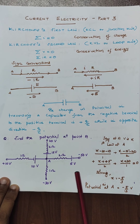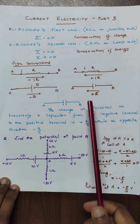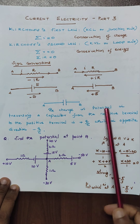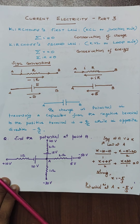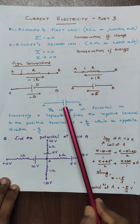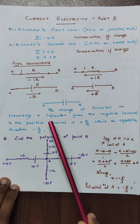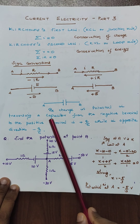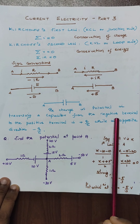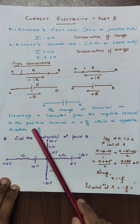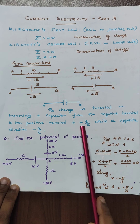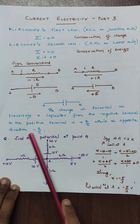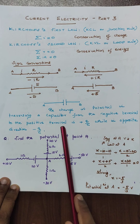From lower potential to higher potential, you take the value as plus in every case. But if you consider a capacitor the same way, the change in potential traversing from the negative terminal to the positive is plus Q by C, while in the opposite direction it is minus Q by C.